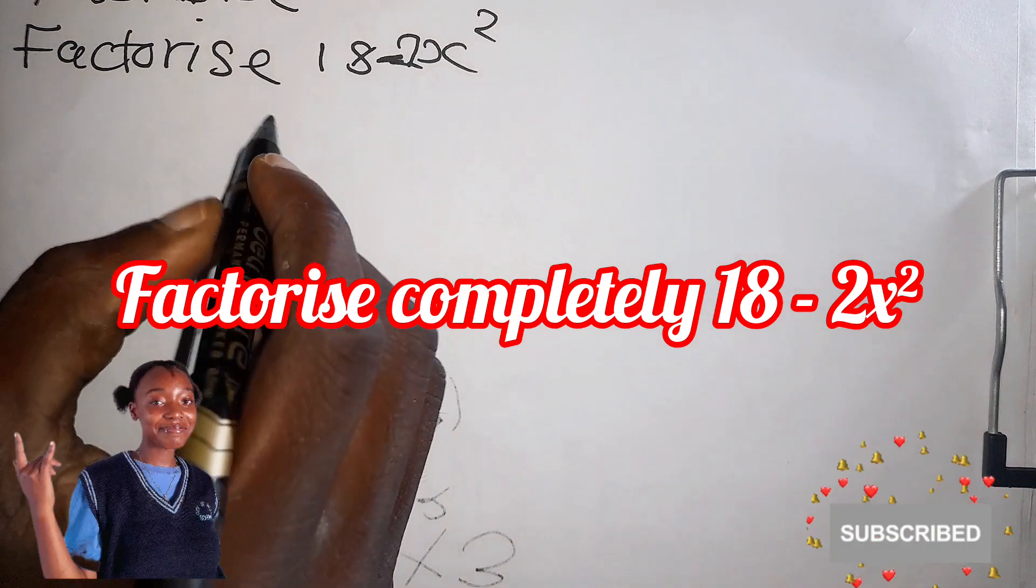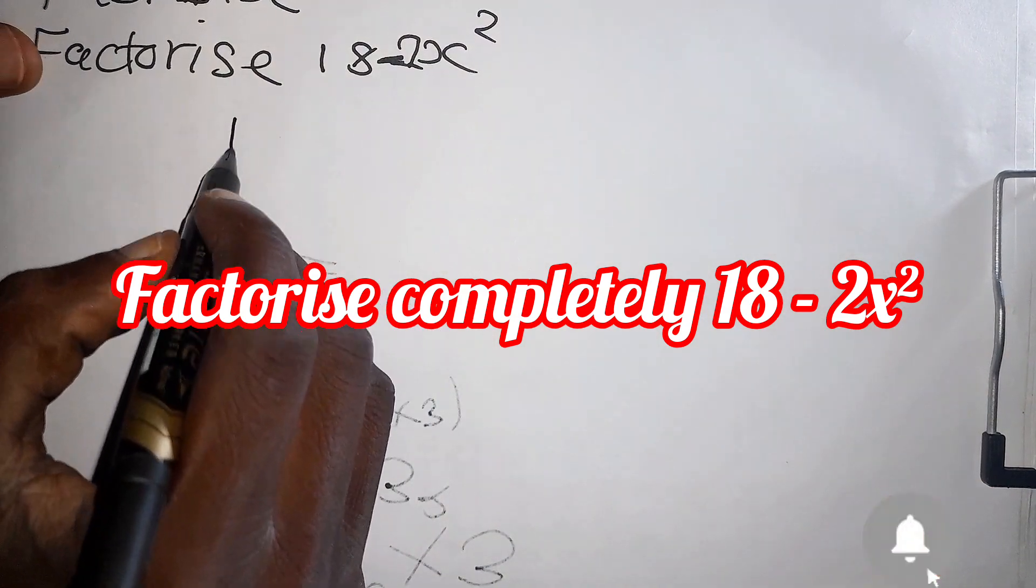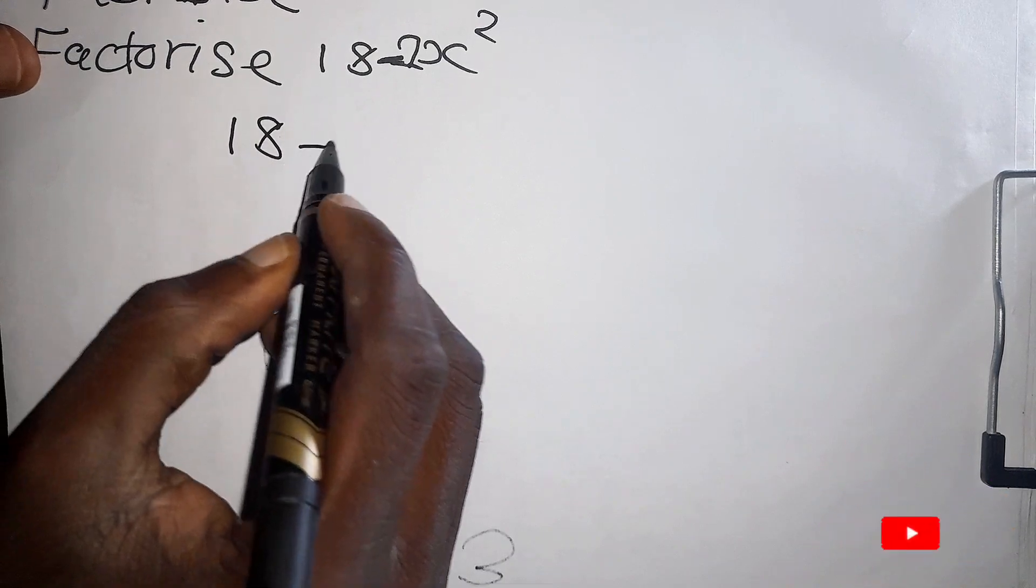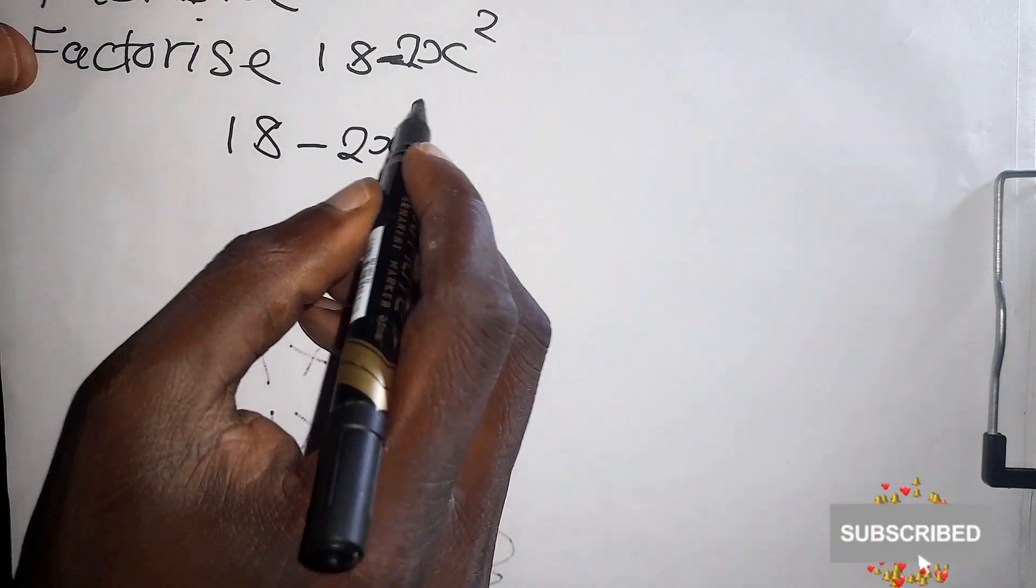Okay, so we have another question. We are given, we are asked to factorize 18 minus 2x squared.